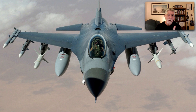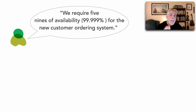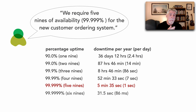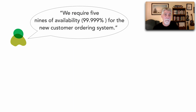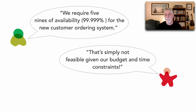Let's take a look at our industry. Suppose your product owner says, "We require five nines of availability" — that is 99.999% availability — for the new customer ordering system. A quick Google search shows that five nines of uptime is actually equivalent to only five minutes and 35 seconds of downtime per year, which averages to about one second a day of unplanned downtime. The architect's response: that's simply not feasible given our budget and time constraints. Again, that word feasibility comes up.